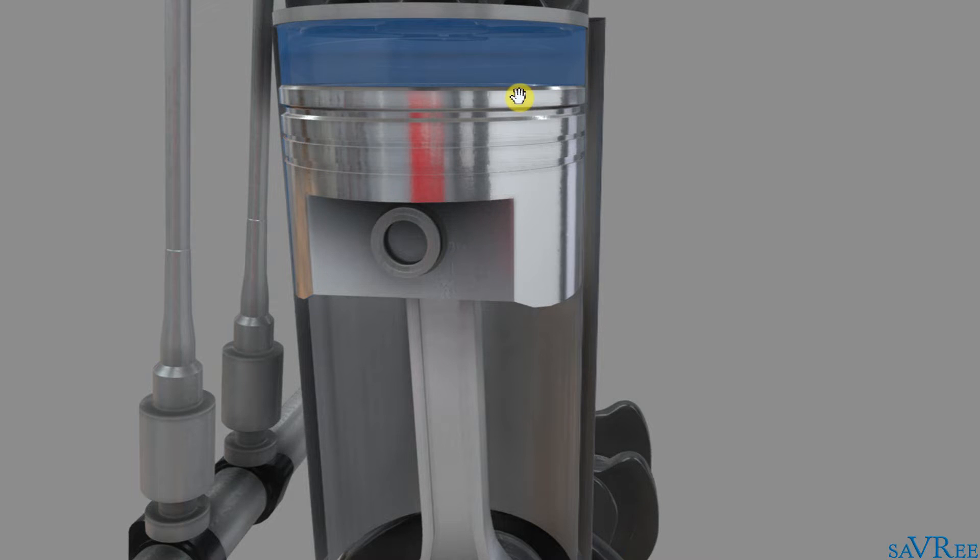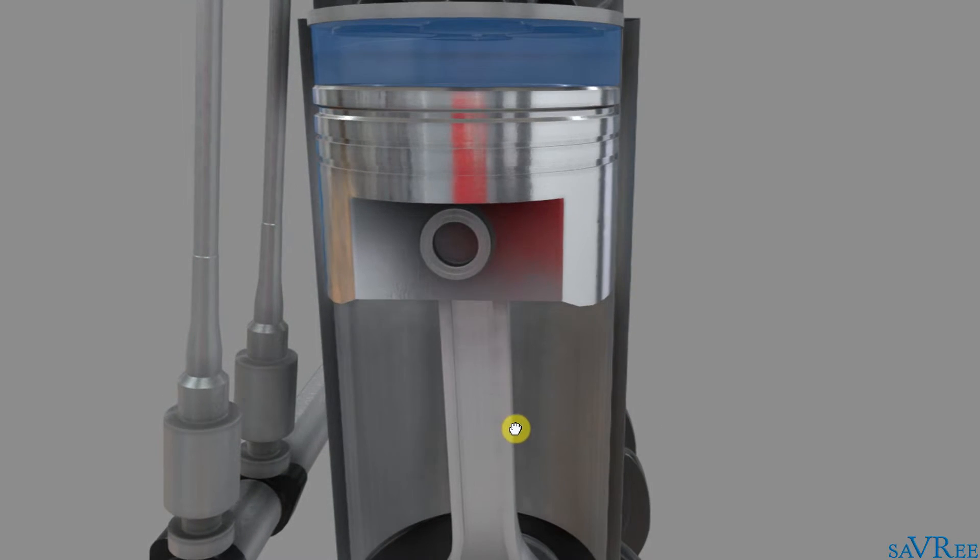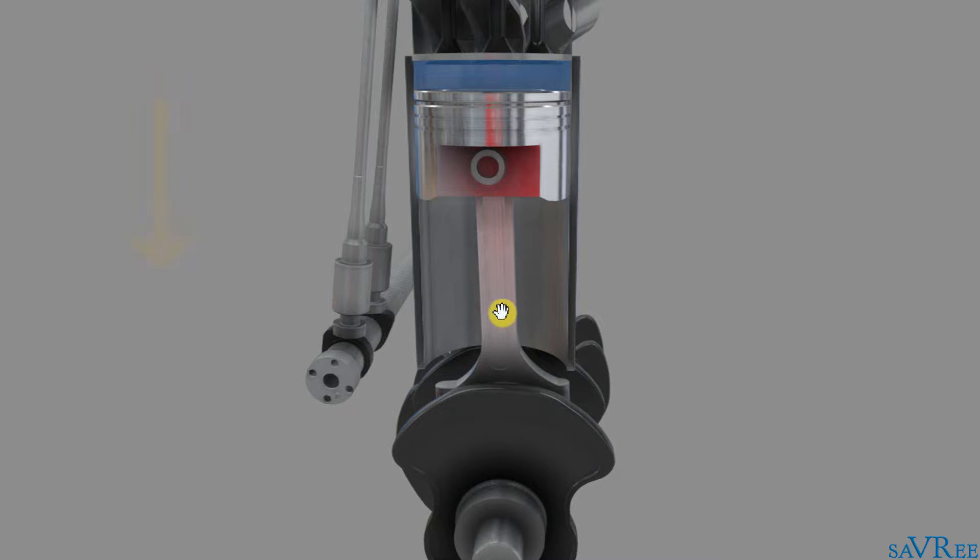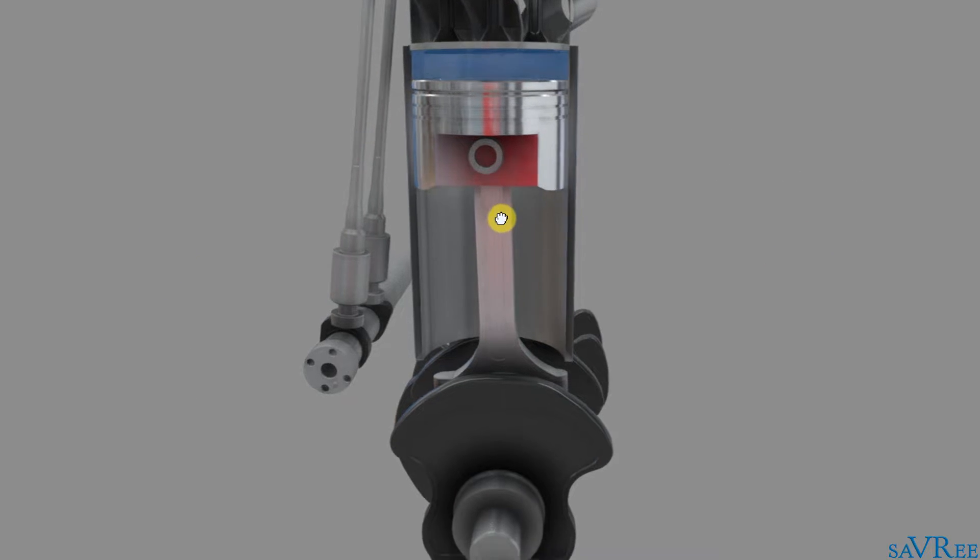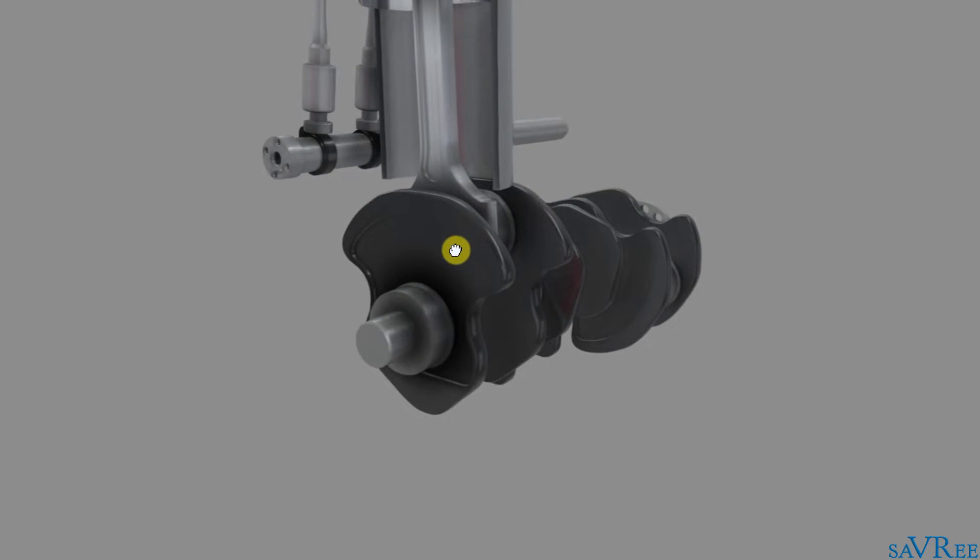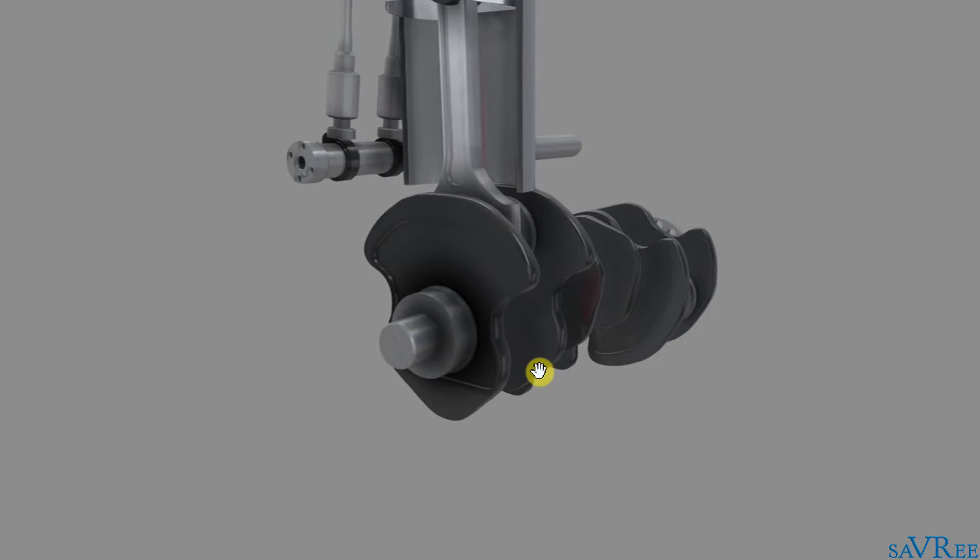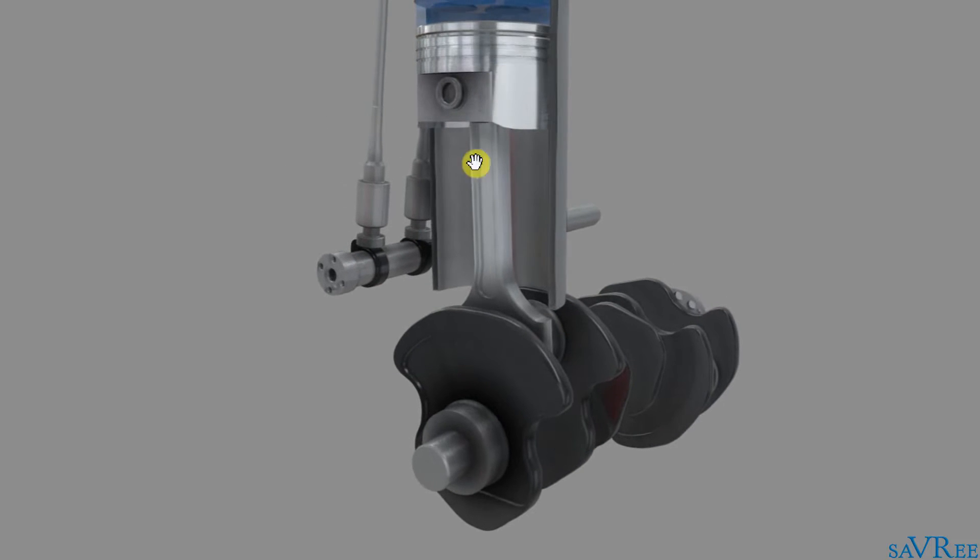So the piston will travel up and down. Every time it travels down once, we refer to that as a stroke. And every time it travels up once, we refer to that also as a stroke. Although the piston itself is traveling up and down, the crankshaft rotates. So we're converting the up and down motion from the piston into rotary motion.